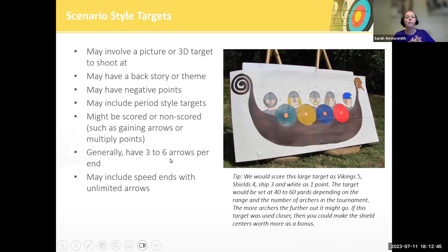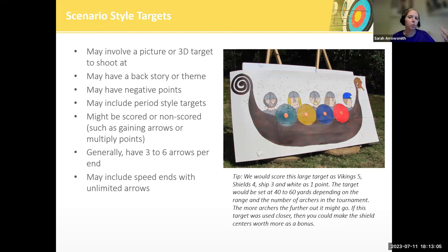We're going to start with scenario-style targets. Usually they involve a picture, sometimes a 3D target. They typically have a theme, so all of the targets will follow something like mythical creatures, or at War of the Phoenix we had the Hundred Years War and all the targets fit in with that theme. They could include some period-style targets, a mix of scored or non-scored targets, and generally three to six arrows per end, and may include speed rounds.